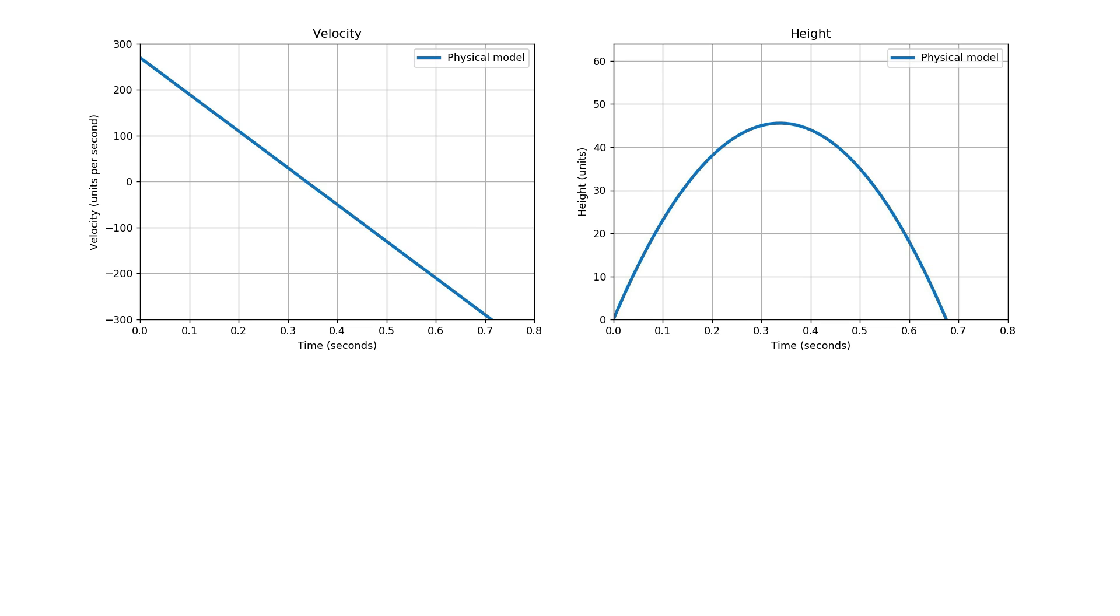On the right hand side you can see height, or vertical displacement, over time. The jump starts at 0, then ascends to a peak before returning to the floor at height 0.